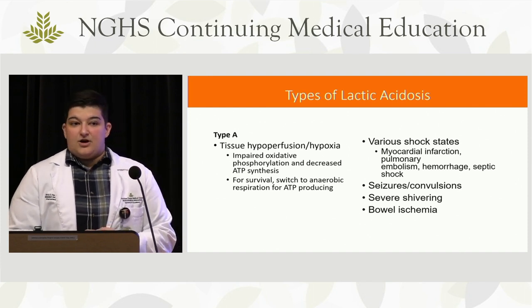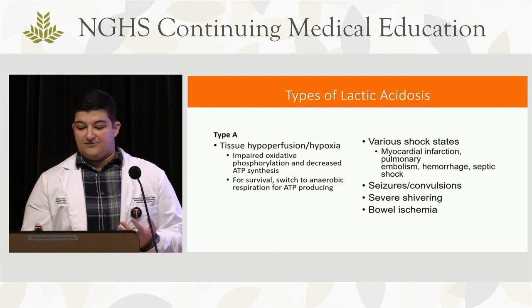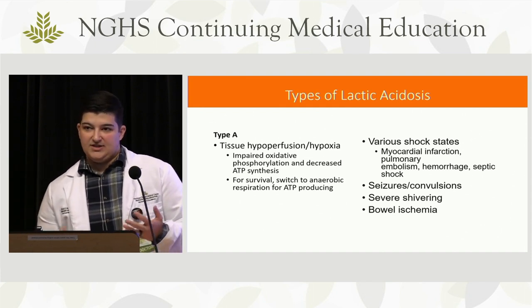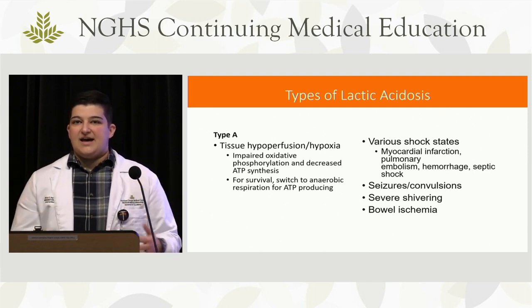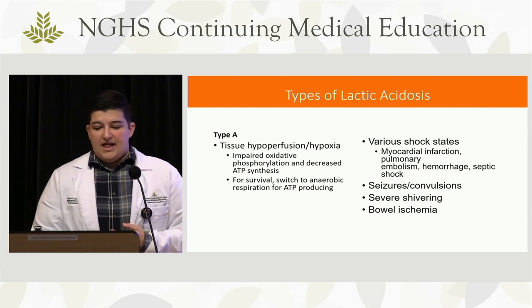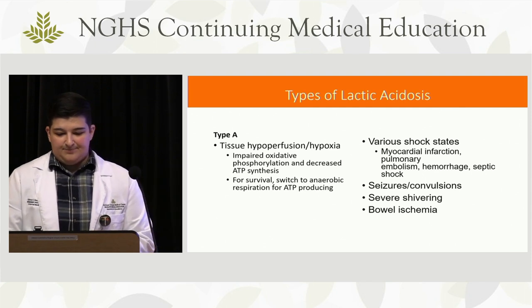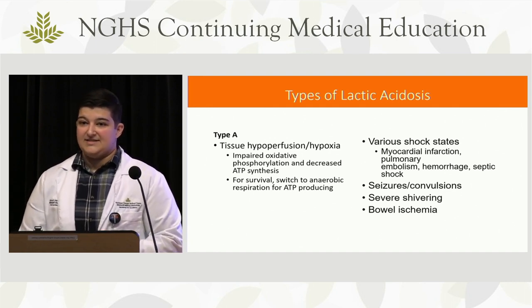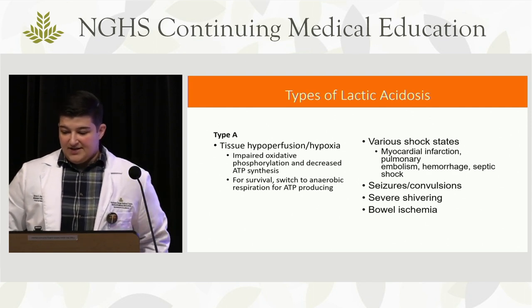Other type A causes include pulmonary embolism causing obstructive shock, hemorrhagic shock — where you aren't carrying oxygen to cells as efficiently — and septic shock, where the body demands more oxygen than it can supply. You also want to think about seizures and severe shivering as causes of elevated lactate, and bowel ischemia — if someone comes in with a lactate of 10, you send them to CT to make sure you're not missing ischemic bowel. The most common cause in type A is cardiac shock.